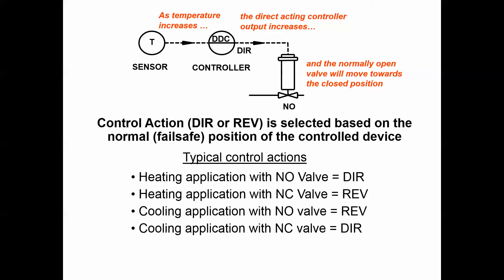With a heating valve, if you want it to fail normally open, you would select a direct acting control output so that as you start increasing the output as the temperature starts rising, you're going to be getting away from that normally open position.